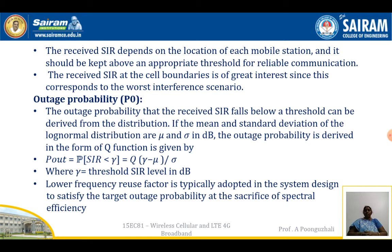If the mean and standard deviation of the log-normal distribution are μ and σ in decibels, the outage probability is derived in the form of a Q function. It is given as: P_out = P(SIR < γ) = Q((γ - μ)/σ), where γ is the threshold SIR in decibels. A lower frequency reuse factor is adopted in system design to target the outage probability at the sacrifice of spectral efficiency.